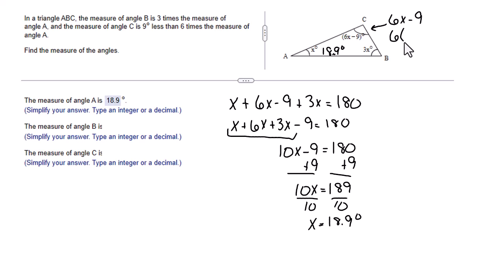We know what X is, so let's put that in. Six times 18.9 minus nine. And that gives us 104.4 degrees. So angle C is 104.4 degrees.